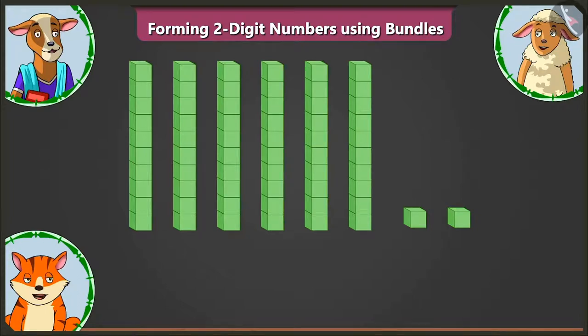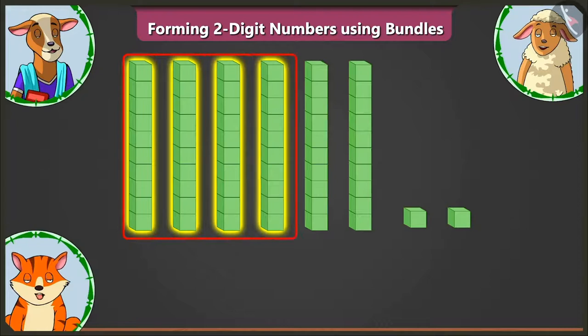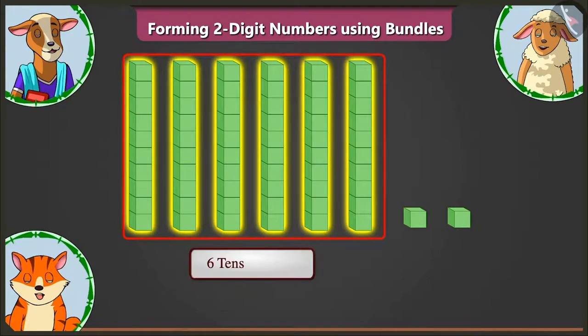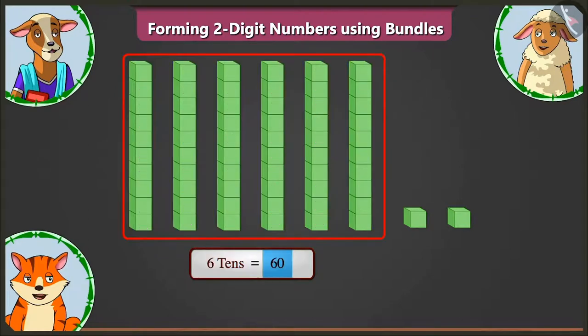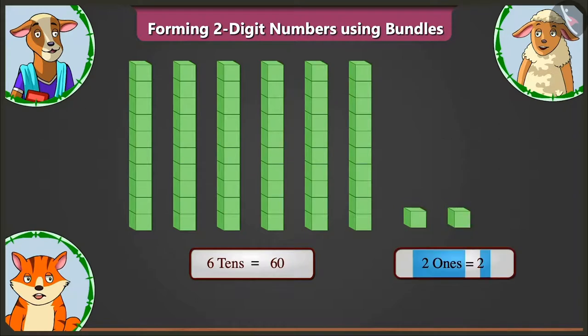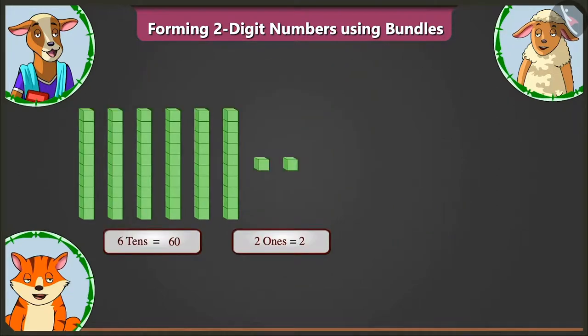Similarly, there are one, two, three, four, five and six groups of ten blocks each. So, six tens makes sixty. Now, there are two small blocks which means there are two ones. Very good.